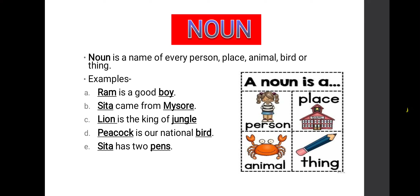Next example: Lion is the king of jungle. Lion is the name of an animal; jungle is the name of a place. So according to the rule of noun, that it represents the name of person, place, or animal, lion and jungle both will become nouns. Next example: Peacock is our national bird. Peacock is a name of a bird, so peacock will become a noun.